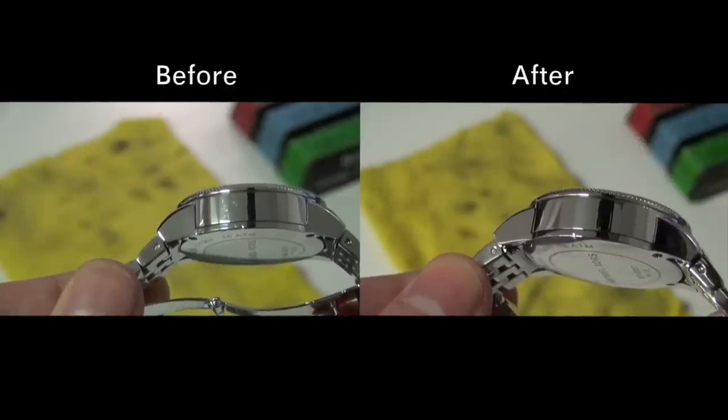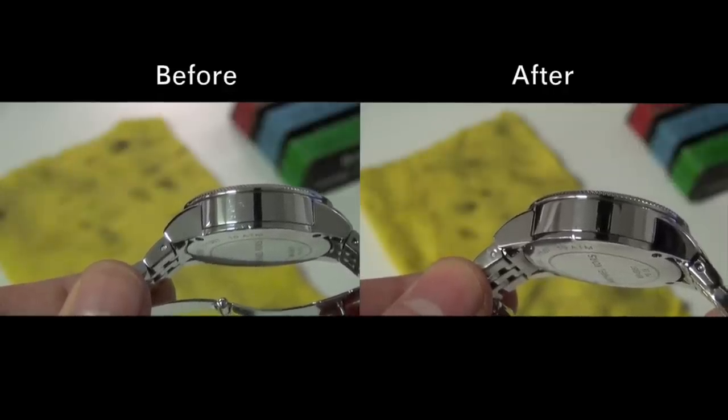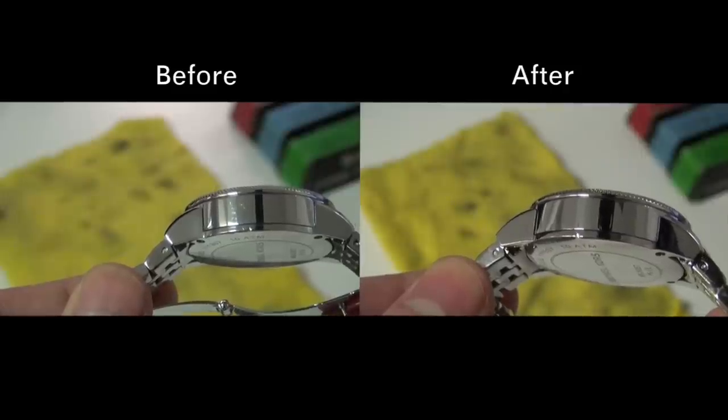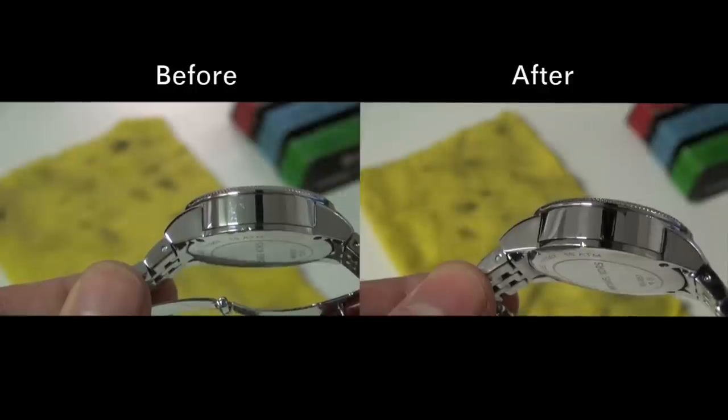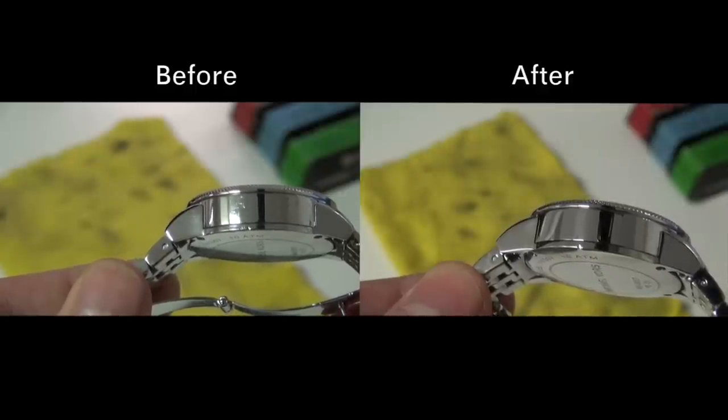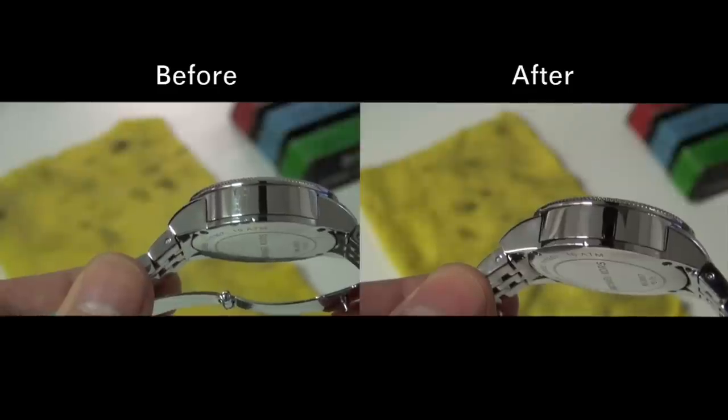Now you can see the scratches are removed on the left hand side of the case. The dent at the bottom of the case will require a more advanced technique which I'll show you at a later time, so check out our YouTube channel for more watch related content. I'm John from the Watch Hut, thanks for watching.